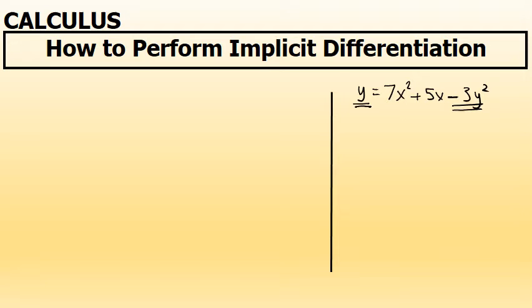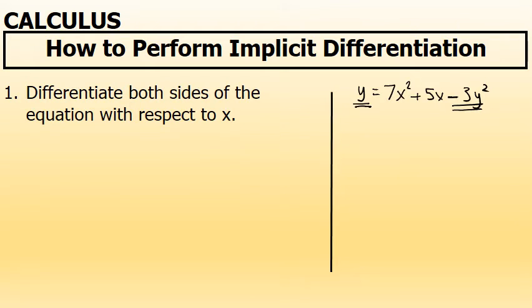Let's take a look at four steps that can be used to perform an implicit differentiation. The first step is to differentiate both sides of the equation with respect to x. The last four words — with respect to x — are important. Every term that you differentiate, if it's a variable other than x, you'll have to use implicit differentiation to find the derivative.